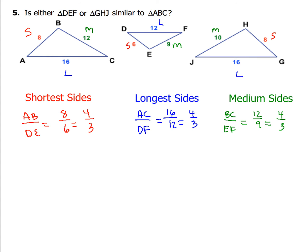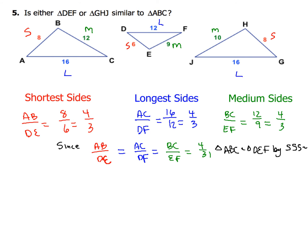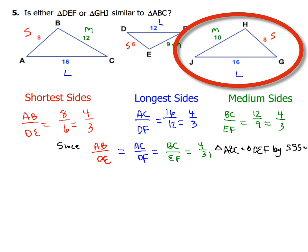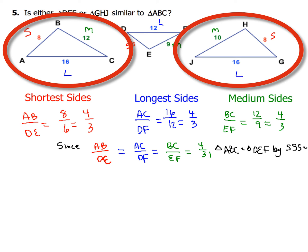Since all three ratios are equal, write your similarity statement: since AB/DE = AC/DF = BC/EF = 4/3, triangle ABC is similar to triangle DEF by side-side-side similarity. Now do the same for triangle GHJ compared to triangle ABC — compare shortest, longest, and medium sides and see if all ratios are the same. If they are, write a similarity statement; if not, explain why.